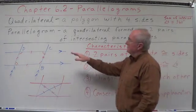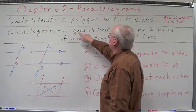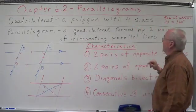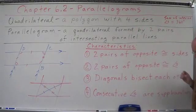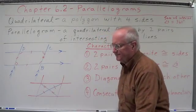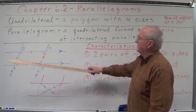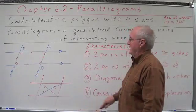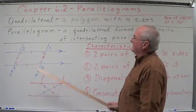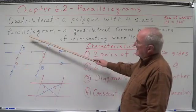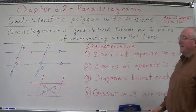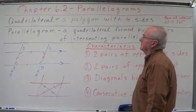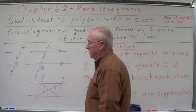From that definition, we're going to define a parallelogram. A parallelogram is a quadrilateral formed by two pairs of intersecting parallel lines. Line DC is parallel to line AB, and they are intersected by line AD and line BC, which are also parallel, forming a quadrilateral — two pairs of parallel lines.